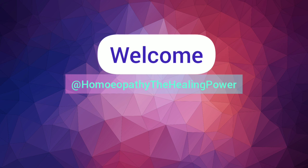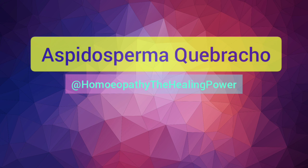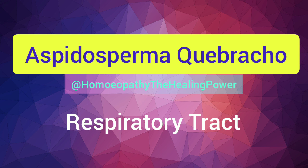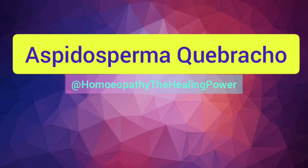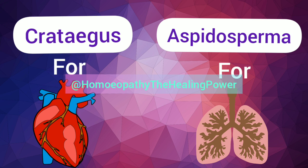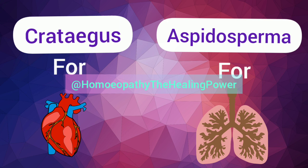Welcome to our channel, Homeopathy: The Healing Power. In today's video we are going to study the homeopathic medicine Aspidosperma quebracho. Aspidosperma is specially indicated in diseases of the respiratory tract, and this medicine can be used as a supportive treatment in COVID-19 infection. Just like Crataegus is a heart tonic, Aspidosperma is a lung tonic in our homeopathic materia medica.